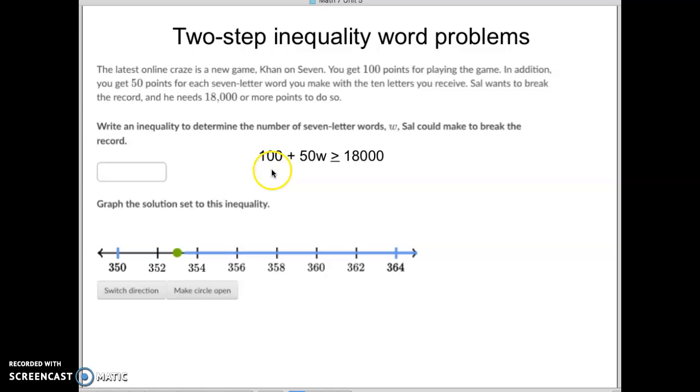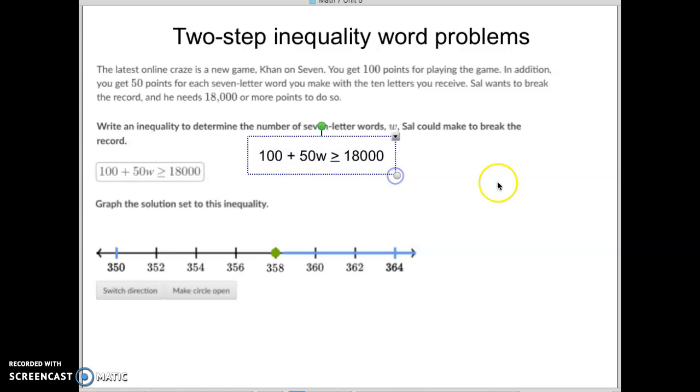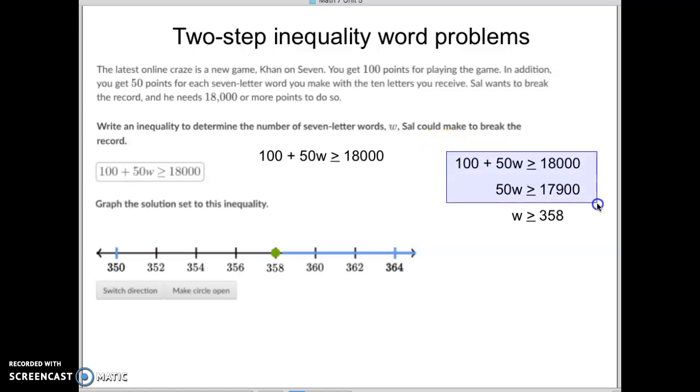So right there is our inequality. See my nice inequality right there? I already had that ready to go. Now, all you have to do is solve this. Subtract 100 from both sides, and you get 17,900 left over. Divide both sides by 50, and you get W is greater than 358.